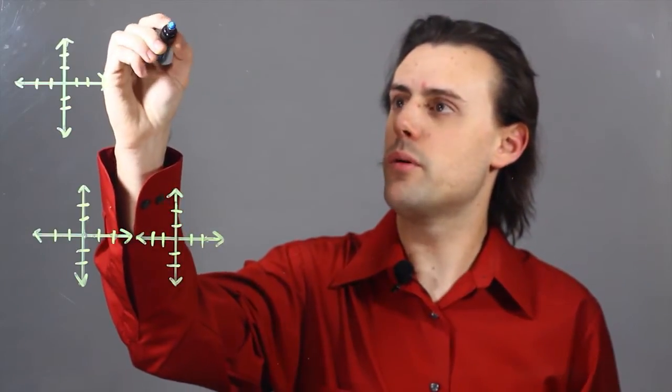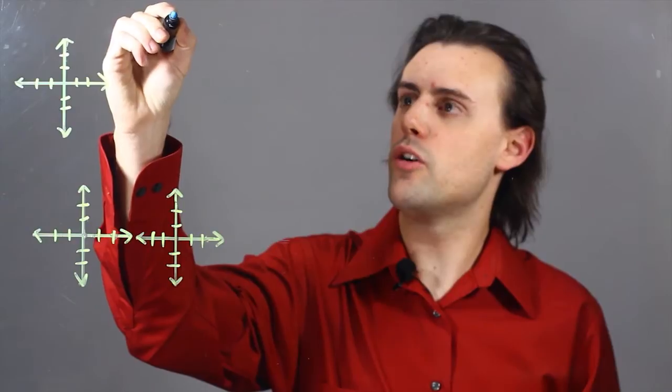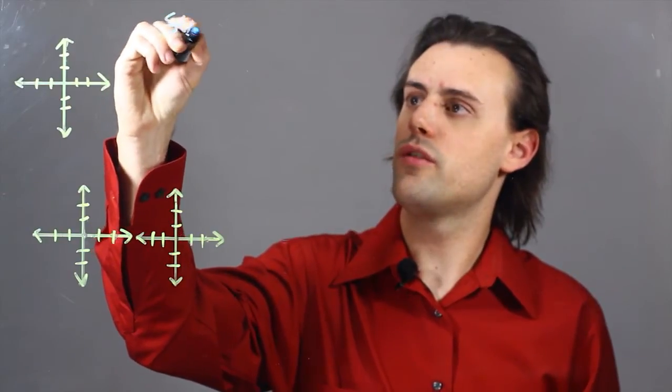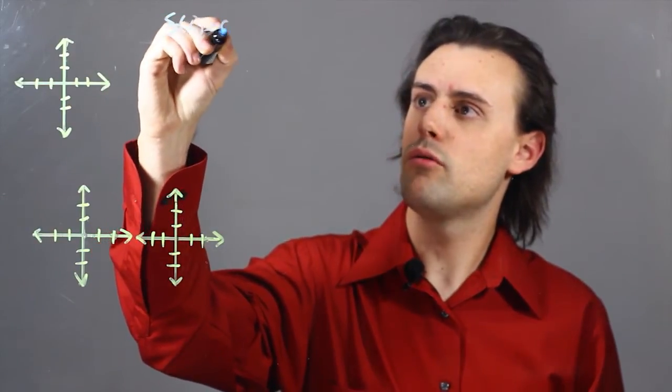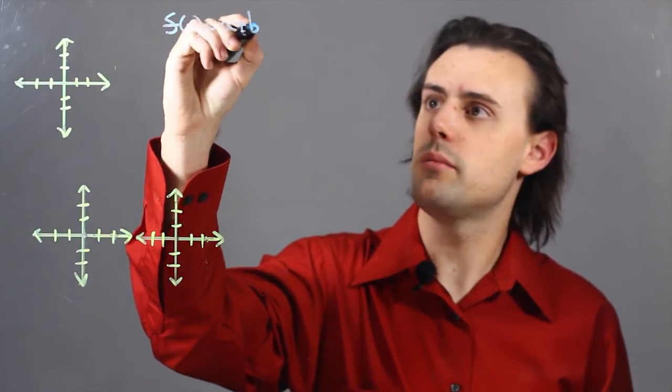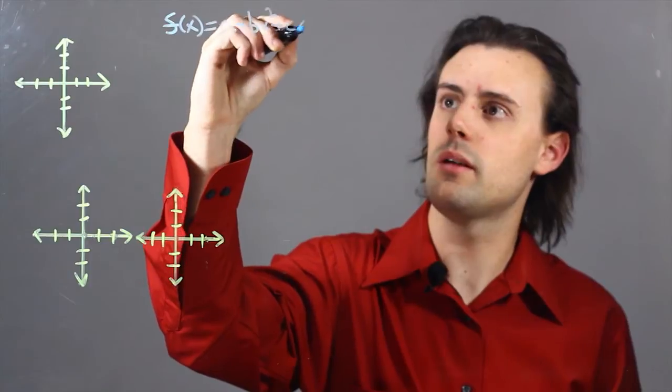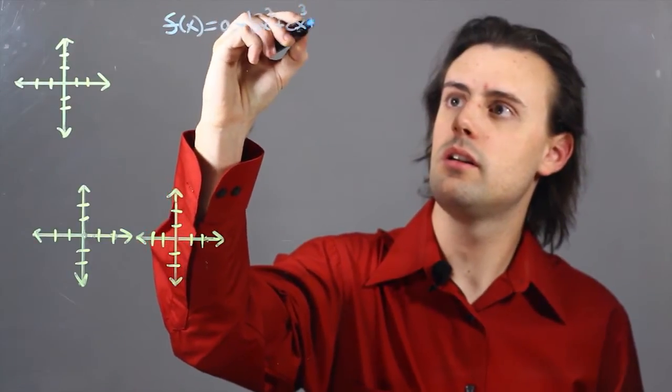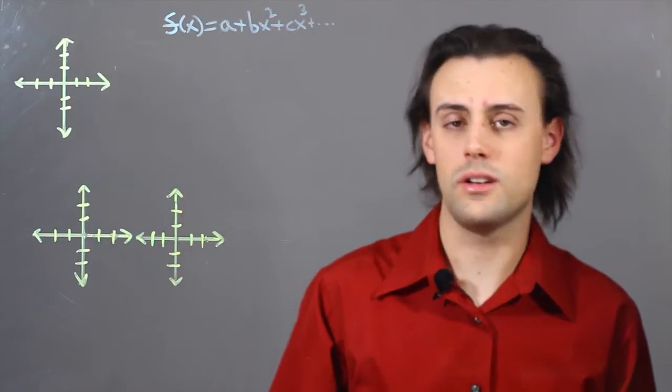So for example, a general polynomial f of x will be some constant a plus b times x squared plus c times x cubed and so on and so forth as an example.